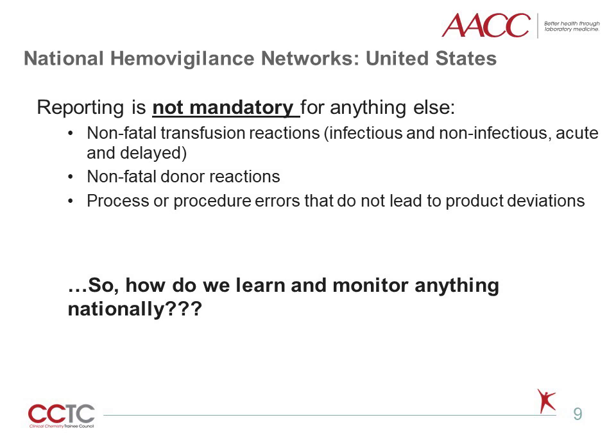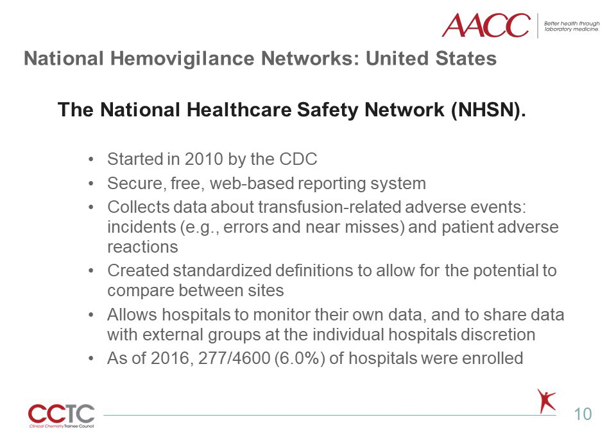Voluntary national reporting systems are available for those who wish to participate. In 2010, the Centers for Disease Control and Prevention, the CDC, began managing the National Healthcare Safety Network, or NHSN, hemovigilance module — a free, voluntary, passive surveillance system. This database serves as the only national surveillance platform for recipient hemovigilance available for use by all U.S. healthcare facilities performing transfusions, and captures standardized data on reaction type, including transfusion-transmitted infections, procedure errors, and near-miss events. Enrollment increased from 82 facilities in 2010 to 277 facilities in 2016, out of an estimated 4,600 facilities in the United States, with mandatory reporting required for all 69 facilities in the state of Massachusetts.